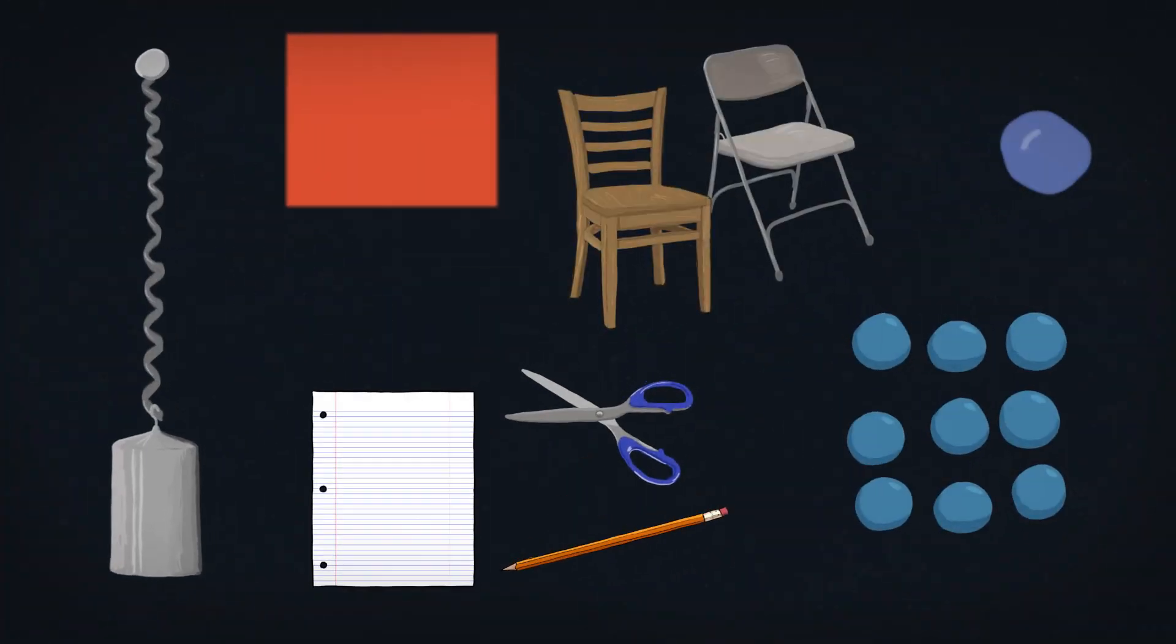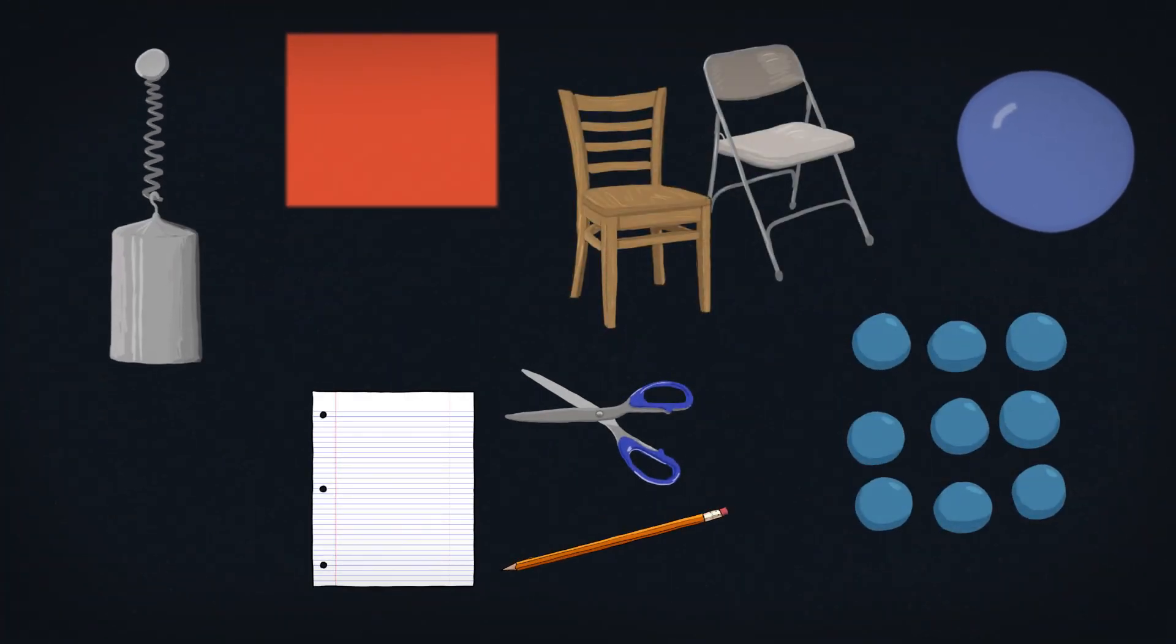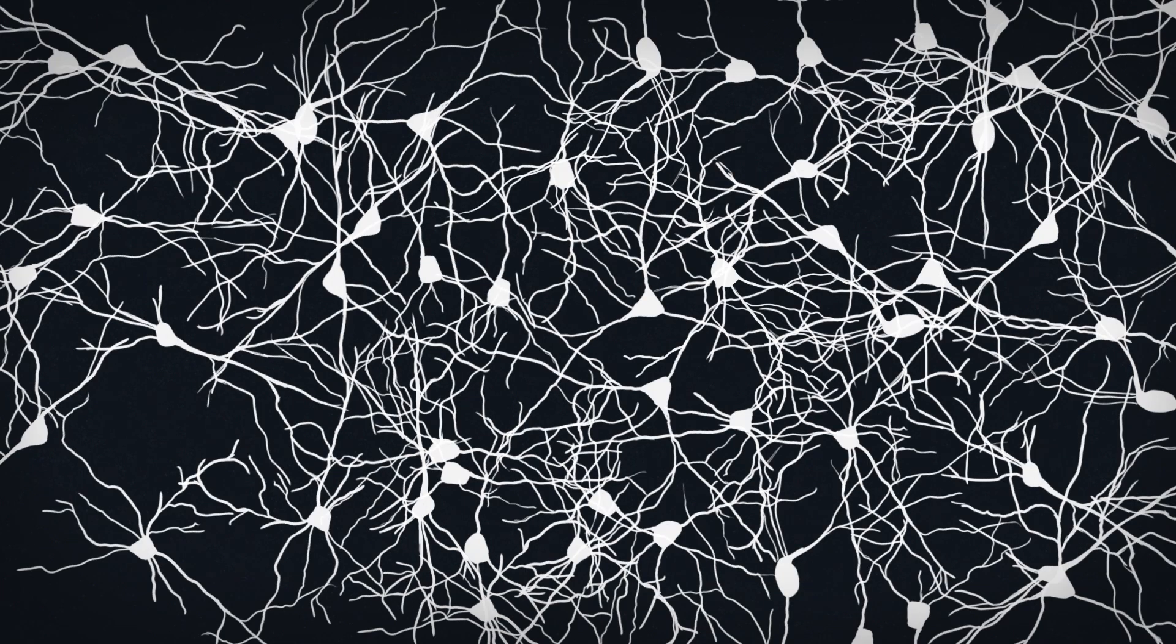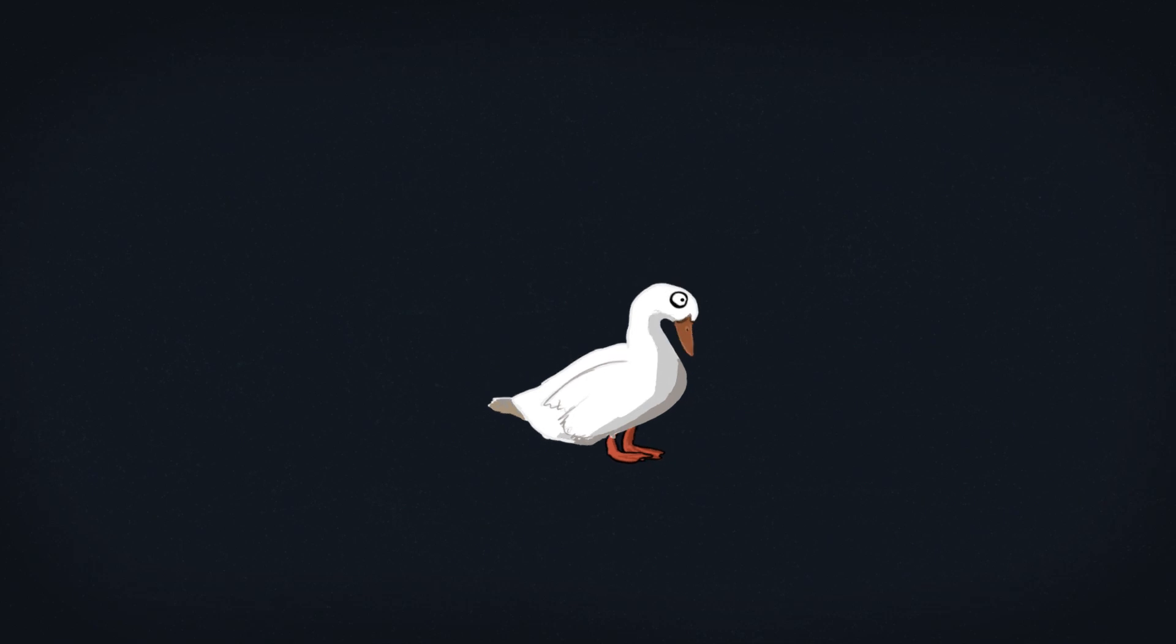From there, your brain tries to make sense of the signals, classifying concepts, and trying to build a model of what it's observing. I don't know how that works exactly. How neurons connecting to neurons becomes conscious ideas like white duck jumping. I should probably ask like a brainologist.